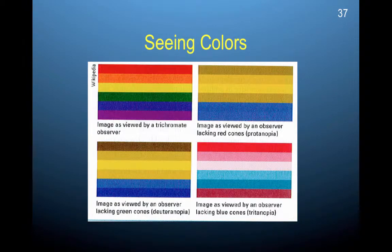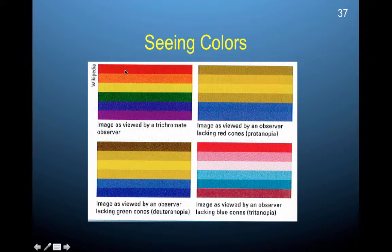For the final video of this chapter, we're going to be talking about how you see colors. Here is an example of how you would see the various colors of the rainbow by someone who is a trichromate — that means they can perceive all three colors.